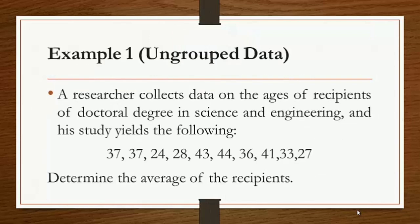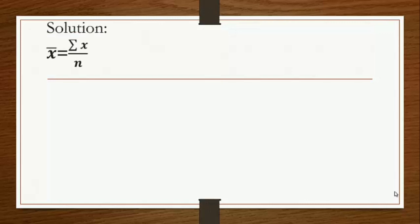Let us take this example for ungrouped data. A researcher collects data on the ages of recipients of doctoral degrees in science and engineering, and his study yields the following. We are tasked to determine the average of the recipients. Since the given example is for ungrouped data, we are going to use the formula x-bar equals summation of x over n, meaning we are looking for the sample mean.